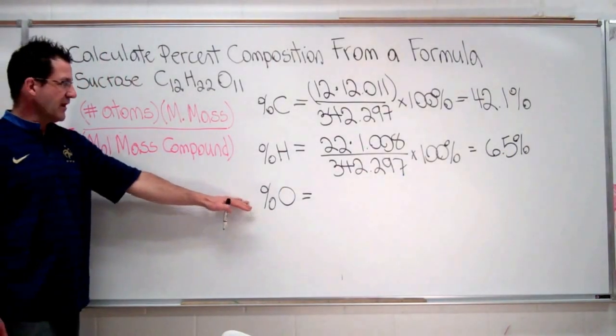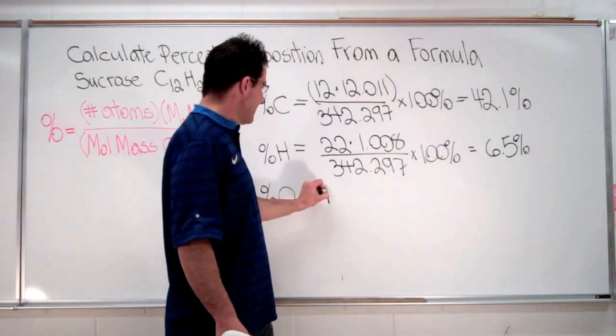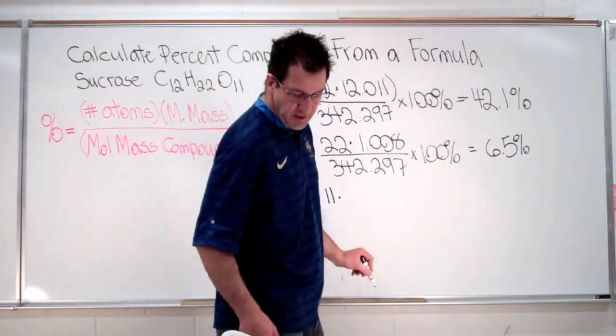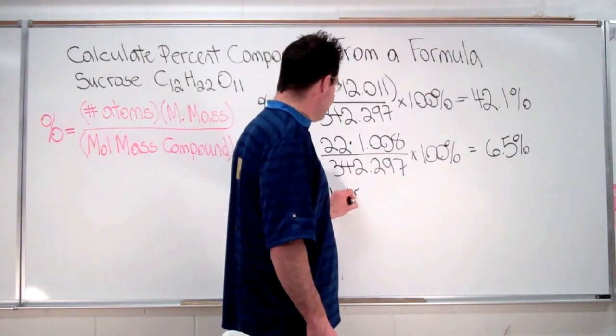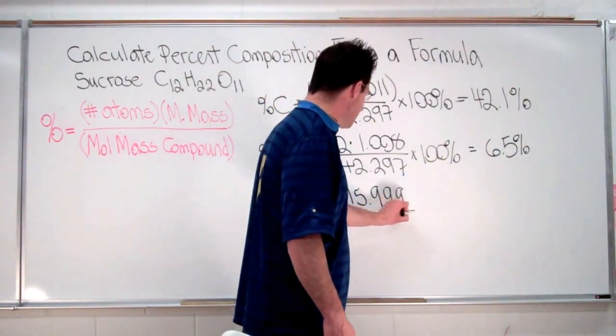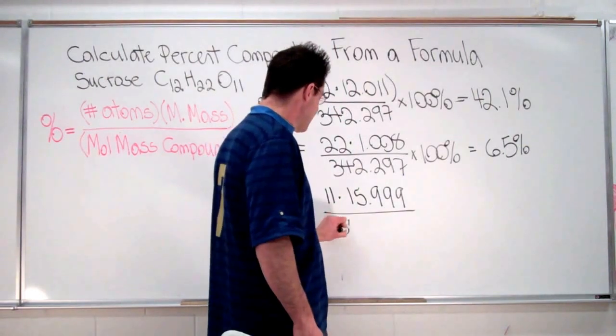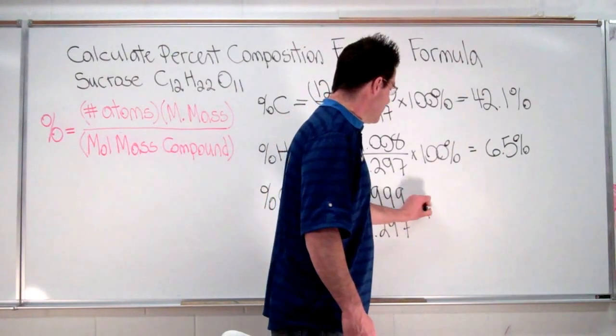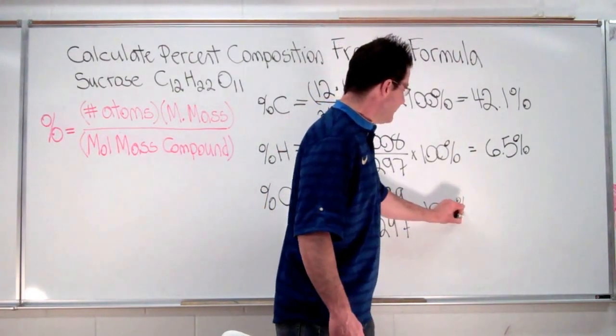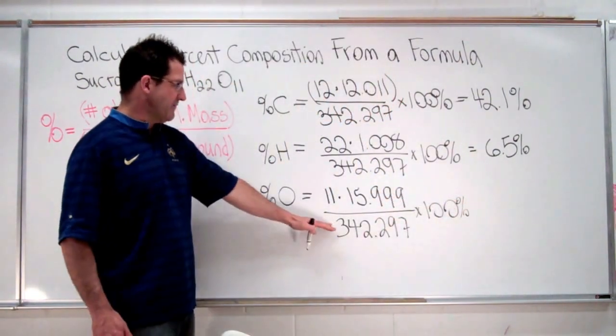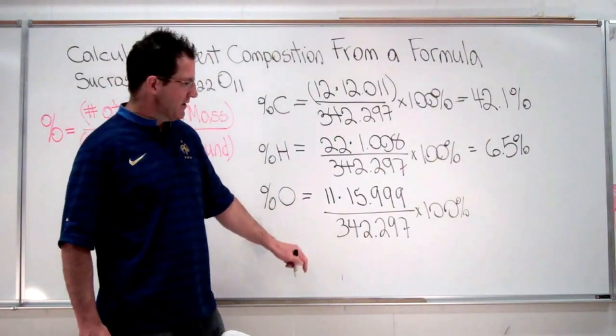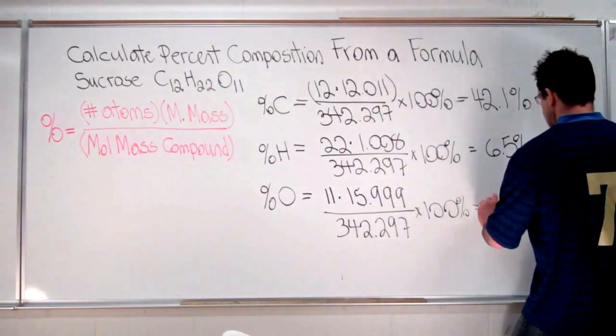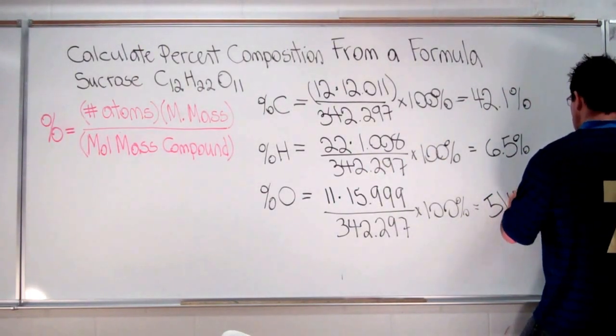Let me repeat the process one more time for oxygen. 11 times the molar mass of oxygen, which we look again on our periodic table, 15.999, divided by the molar mass of the entire compound, times 100%. And we can come up with the percent composition of oxygen in this case is 51.4%.